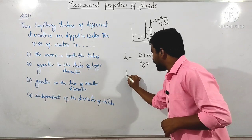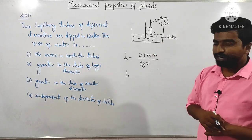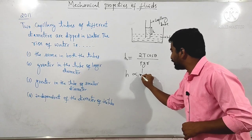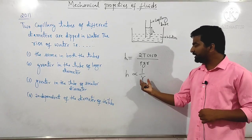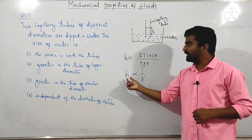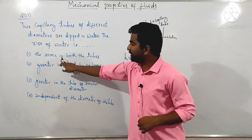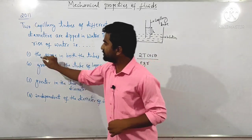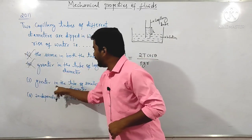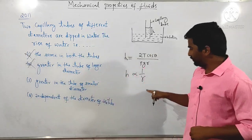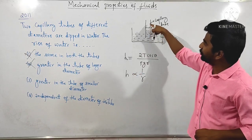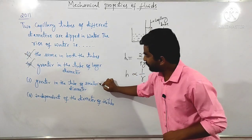The rise of liquid through the capillary tube is inversely proportional to the radius. If the radius is more, the rise will be less; if the diameter is more, the rise will be less. The option 'same in both tubes' is wrong. 'Greater in the tube of larger diameter' is also wrong. 'Greater in the tube of smaller diameter' is correct — this is the answer.